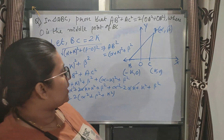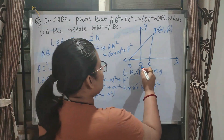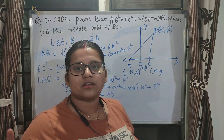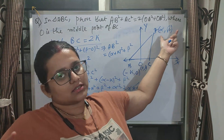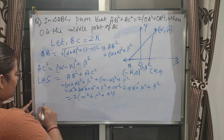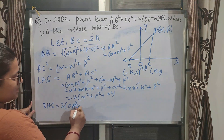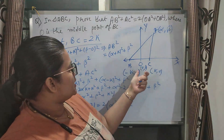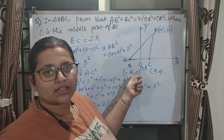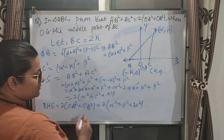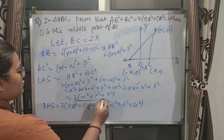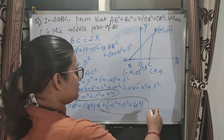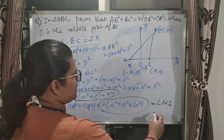Now calculating RHS = 2(OA² + OB²). Since O is the origin (0, 0) and A = (α, β), OA² = α² + β². For B = (-k, 0), OB² = (0 - (-k))² = k². So RHS = 2(α² + β² + k²). Since LHS = 2(α² + β² + k²) = RHS, the result is proved.